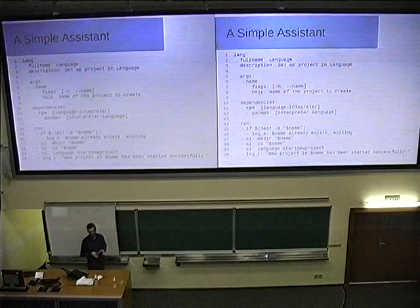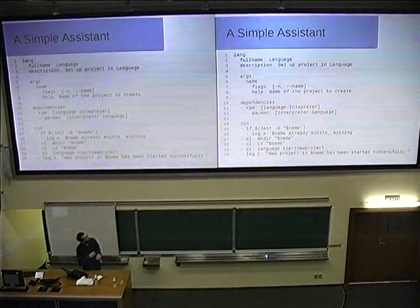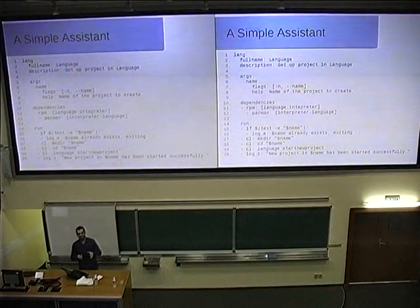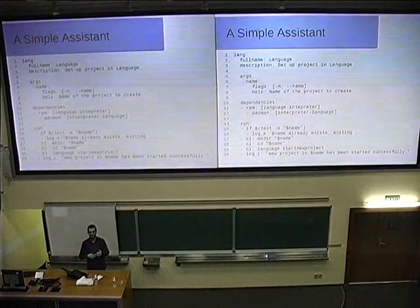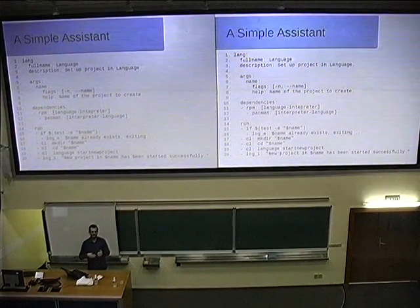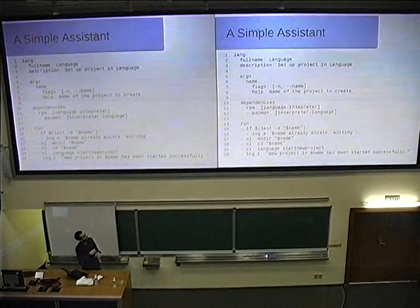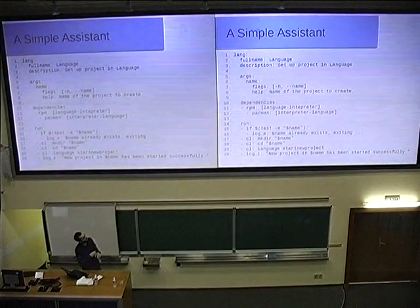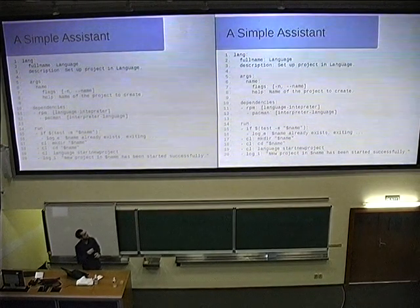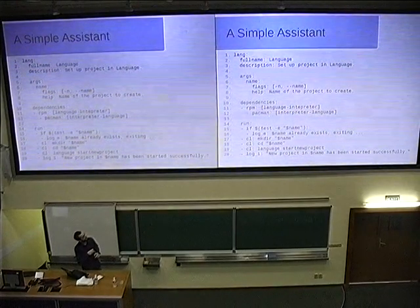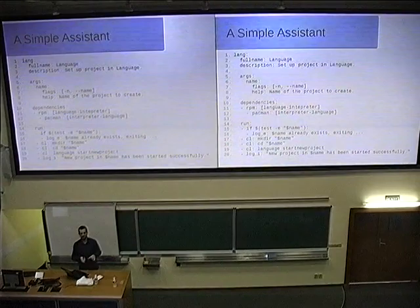So it's an assistant. It has a full name. It has some sort of description that you can show to user. On line five it specifies its arguments. Like these are the arguments that it takes on command line, or it will generate some sort of input for them in GUI. So it's name, which has some flags. These will be used on command line. It has some help that you want to display to user. It has some dependencies. There's a small typo. There are two more spaces here. It shouldn't be on the same level with the RPM dependencies. So the dependencies are maybe the least intuitive part of an assistant.